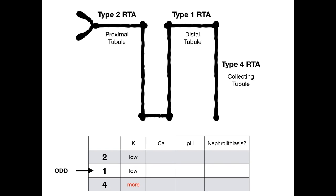For calcium: types 2 and 4 are even numbers, so calcium is normal. But type 1 is the odd man out, so calcium is high — I put it in red. For pH: types 2 and 4 have urine pH less than 5.5. But type 1 is the odd man out, so pH is greater than 5.5 — also in red. For nephrolithiasis: types 2 and 4, no kidney stones. But type 1 is the odd man out — yes, you will see kidney stones. This is easy to remember because elevated calcium can precipitate nephrolithiasis.